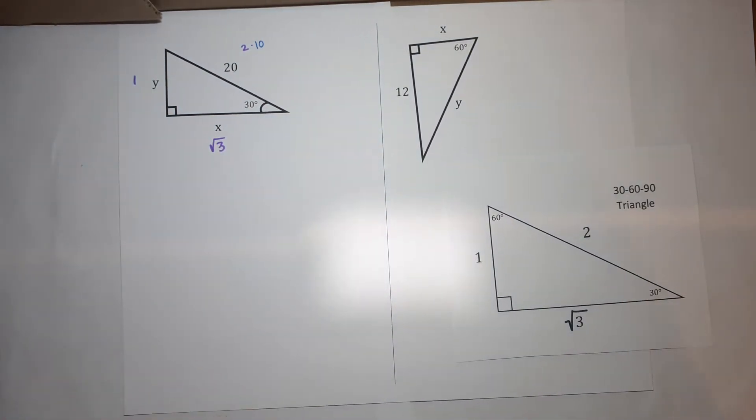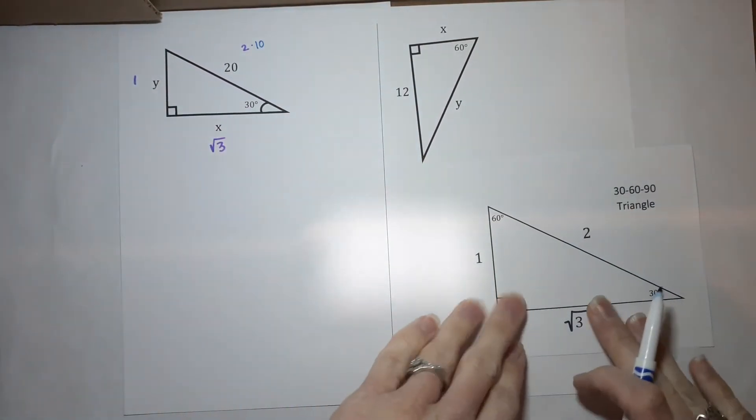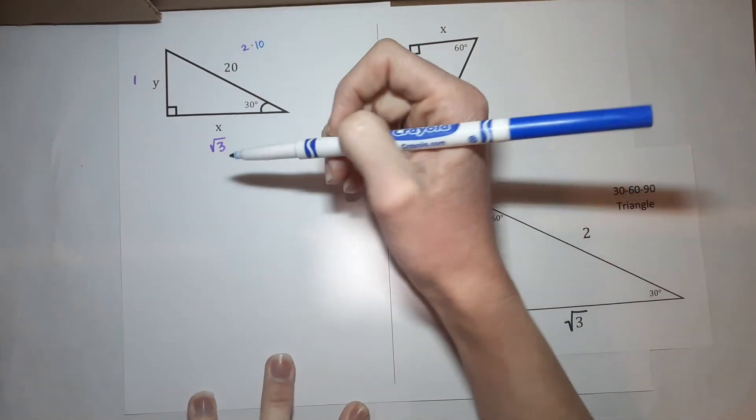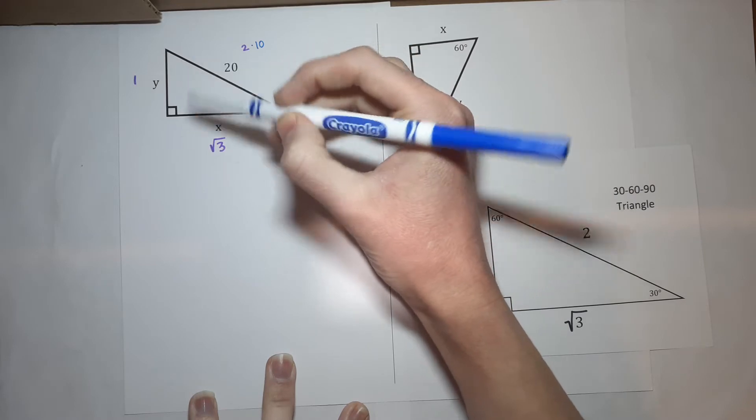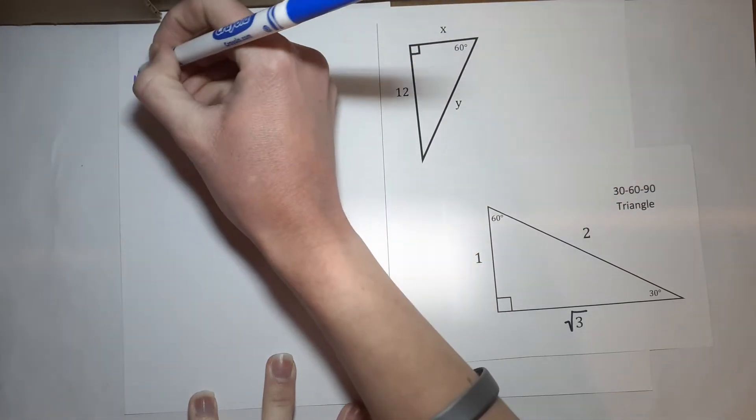Basically, how you could think of it is, it's not to scale, but you could think of it as that this triangle is 10 times bigger than this one. So, if this side is times 10, because it's a 30-60-90 triangle, this side is also times 10, and this side is times 10.